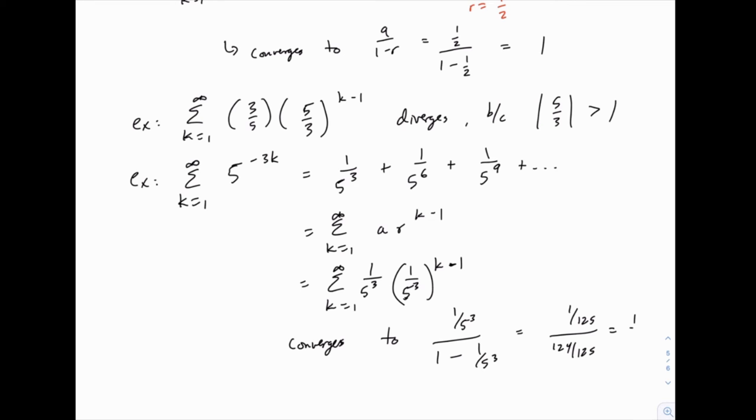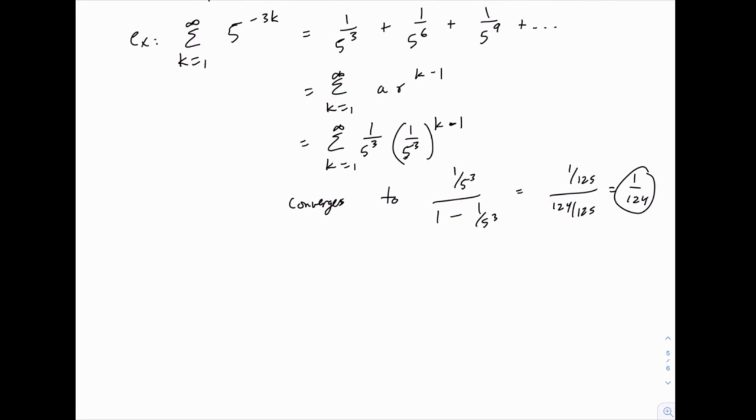So it turns out that this is 1 over 125 divided by 124 over 125, which simplifies to 1 over 124. So this one converges again because r is less than 1, and we can even do a little quick work to figure out what it converges to.